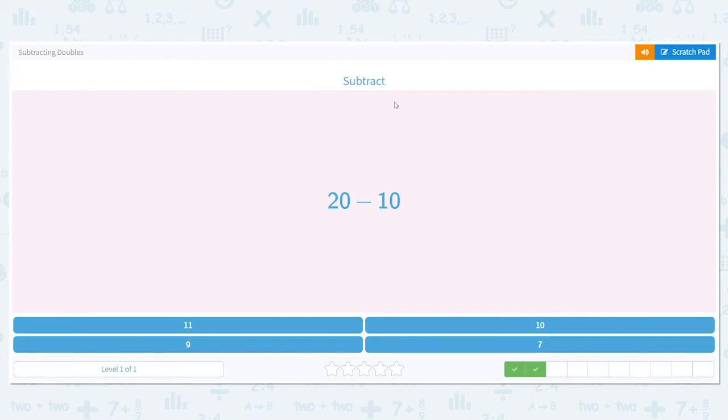Next we have 20 minus 10. This one is longer, that would be a lot of circles to draw, but I can use base 10 sticks instead. Base 10 sticks are strips that have 10 blocks in them. So we're going to draw sticks like this. So pretend that that has 10 cubes in it.